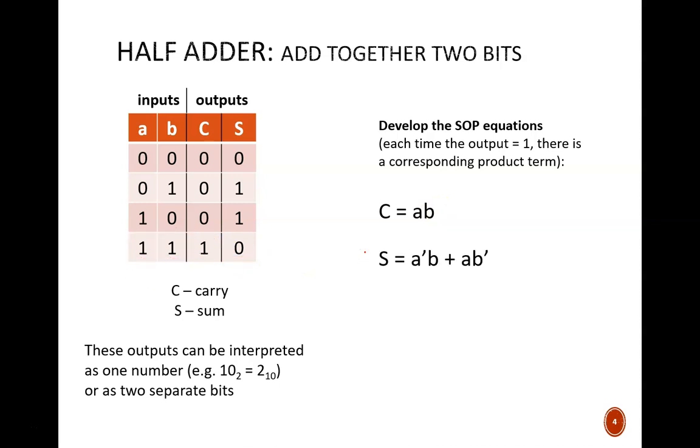There are two rows where S is true, which leads to the equation S equals A prime B or AB prime. Either B needs to be true, or A needs to be true, but not both, in order for the output to be true. Wait a sec. That sounds just like exclusive OR logic, and indeed it is. So we can simplify the equation to just S equals A exclusive OR B.